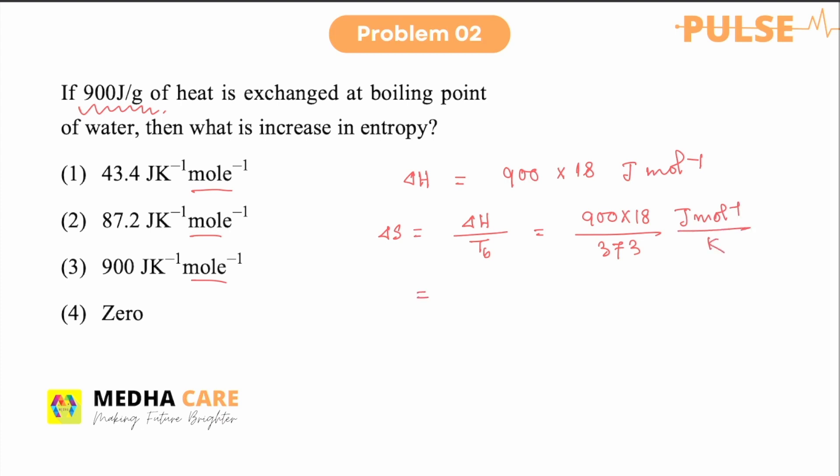Joule per mole Kelvin. So if you see this answer, it will be 43.4 Joule Kelvin inverse and mole inverse. So the correct answer will be 1. So don't miss this point. Here it is given in Joule per gram. So we have to convert that one to Joule per mole.